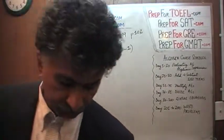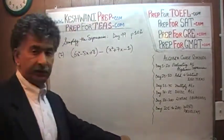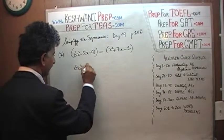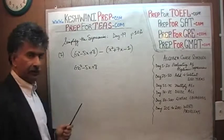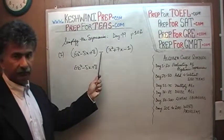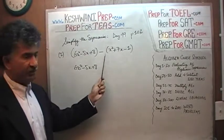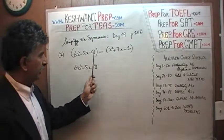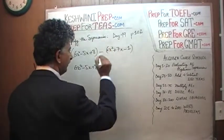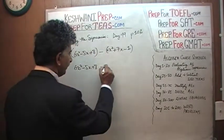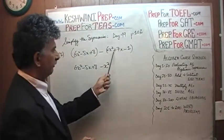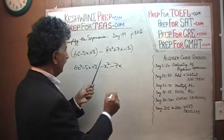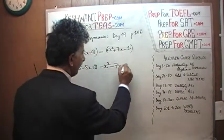The very first thing we have to do is open the parentheses. Opening the first parenthesis is straightforward — we just copy it down: 6x squared minus 5x plus 8. Then we need to slow down, because there is a negative sign in front of this second parenthesis, which means every term inside gets multiplied by a negative. So negative times positive x squared gives negative x squared, and negative times positive 7x gives negative 7x.